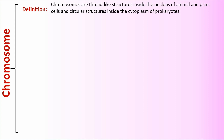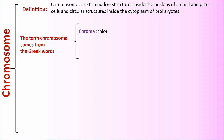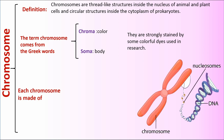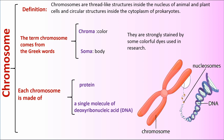Chromosomes are thread-like structures inside the nucleus of animal and plant cells, and circular structures inside the cytoplasm of prokaryotes. The term chromosome comes from the Greek words: chroma, meaning color, and soma, meaning body. They are strongly stained by some colorful dyes used in research. Each chromosome is made of protein and a single molecule of deoxyribonucleic acid, DNA.